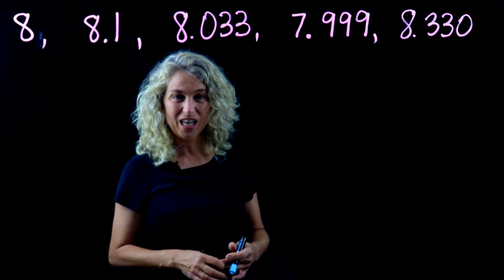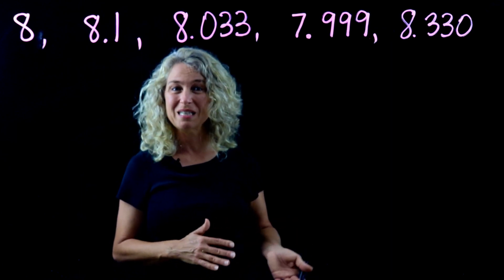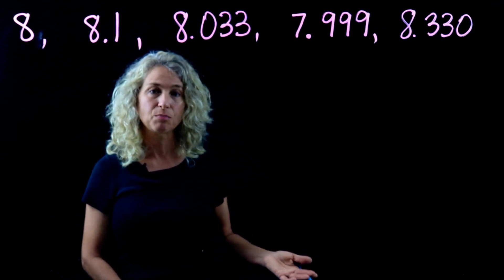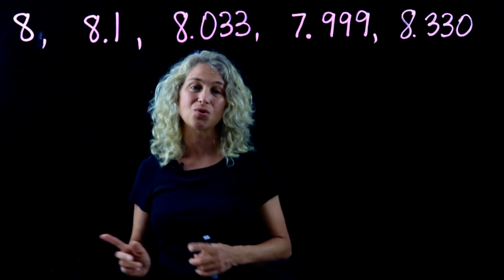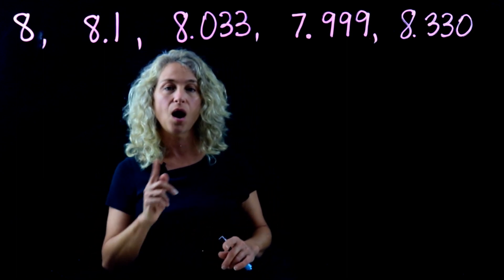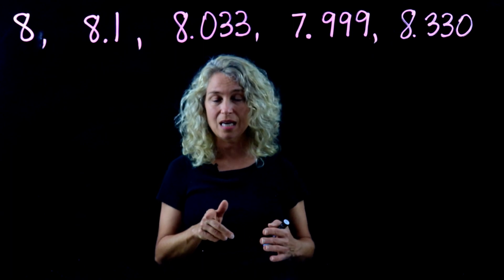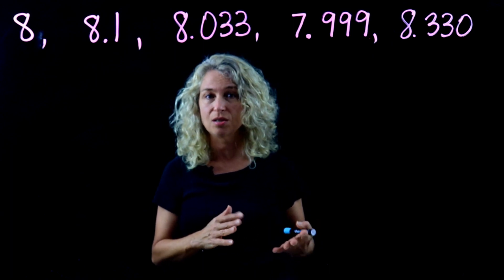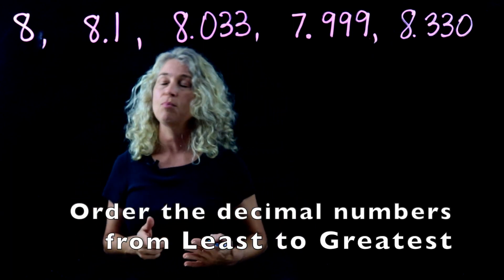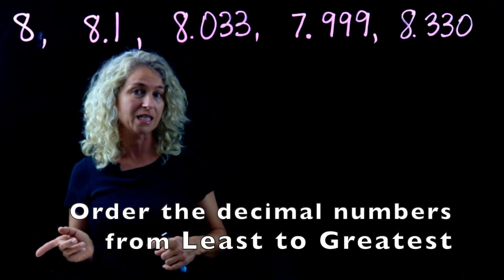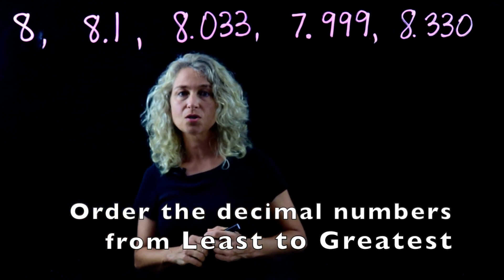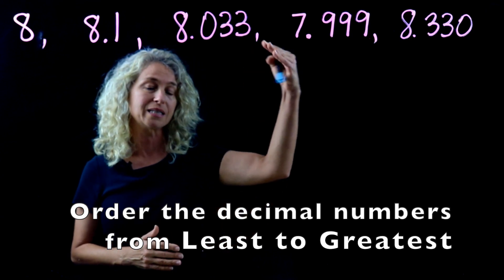In this video we are going to compare decimal numbers all the way to the thousandths place and order them either least to greatest or greatest to least. Always be careful to see which question you're being asked. In this example we want to order from least to greatest.